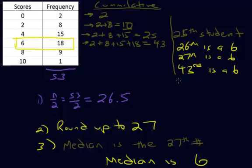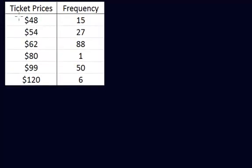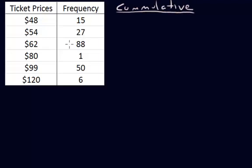We're going to go through another example, and hopefully by the end of that example this should make sense. Our next example: we want to find the median ticket price of this frequency distribution. What you're going to do is set up this third cumulative column. The first 15 people all have $48 tickets, so the last person in this group is the 15th person.